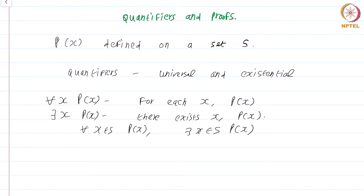Let me make a general remark that will help in proofs. The universal quantifier can be read in two ways: 'for all' or 'for each' — both mean the same thing. But I recommend using 'for each', because 'for all' gives the impression that you are substituting the entire set S all at once, whereas 'for each x' gives the more correct impression that you are taking a particular element one at a time. I will use both interchangeably, but I will consciously try to use 'for each'.